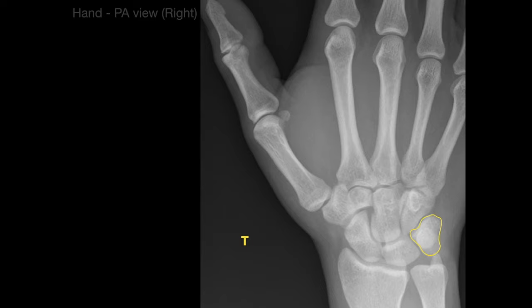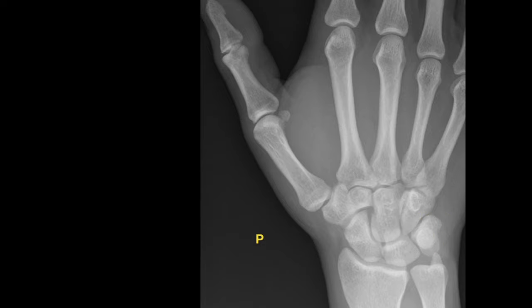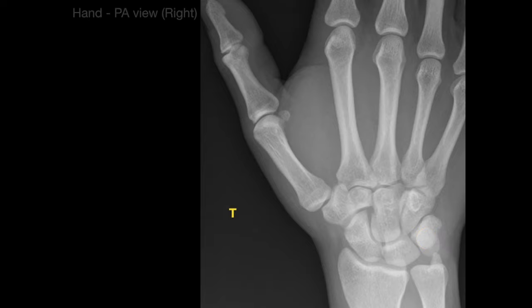T stands for triquetrum — Latin for three corners — because it articulates with three bones: the hamate, the lunate, and the pisiform bone. Next, P is for pisiform, which is Latin for pea-shaped, because it looks like a green pea. This is a sesamoid bone — the last of the eight carpal bones to form — embedded in the tendon of the flexor carpi ulnaris. The only carpal bone it articulates with is the triquetrum.